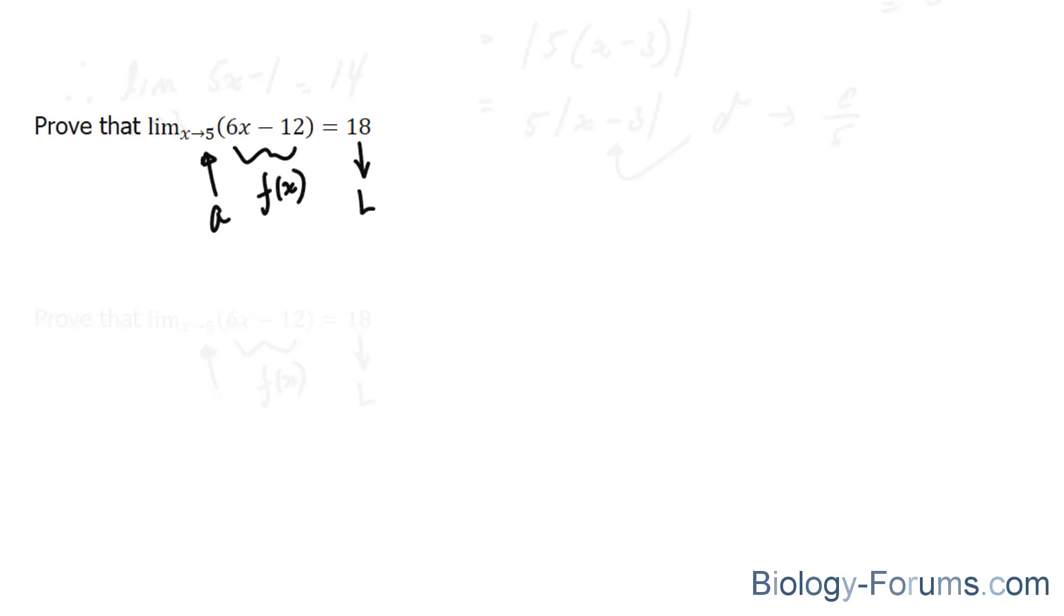And what we want is the absolute value of f of x minus L is less than epsilon when 0 is less than the absolute value of x minus a and is less than delta. I will start off by writing out my f of x minus L and simplifying.